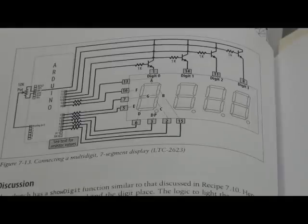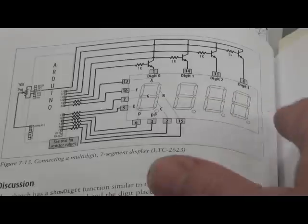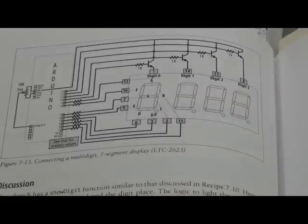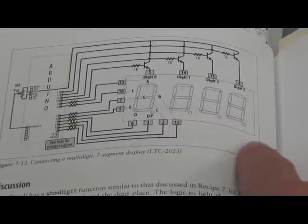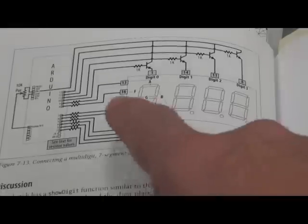So the other advantage in reducing the port lines, or the number of lines needed to drive those, is that it will reduce the amount of current because the max current that you would ever be drawing will be that of one digit.